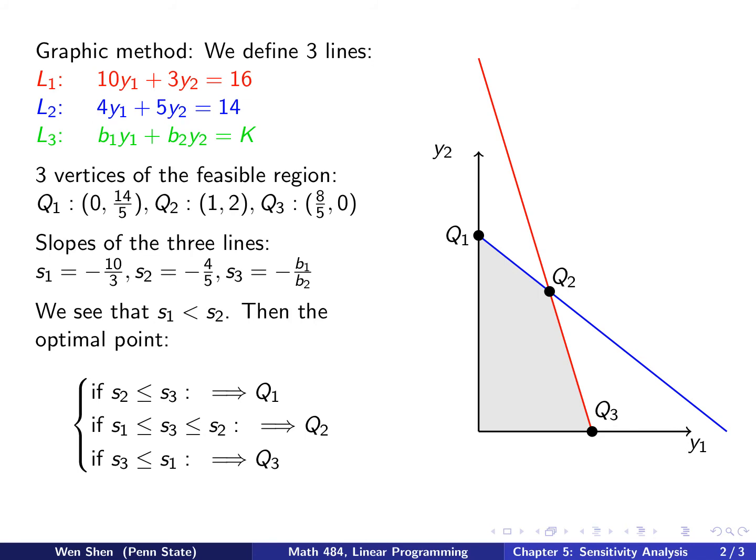So from the previous discussion, we also know that the slopes of those three lines are of importance. So let's compute them. So S1 is for the line 1, it's the red one, it's negative 10 over 3, S2 is negative 4 over 5, and then S3 for the green one is negative b1 over b2. Okay? And you see that S1 is less than S2, so this is more down than that one. Okay,